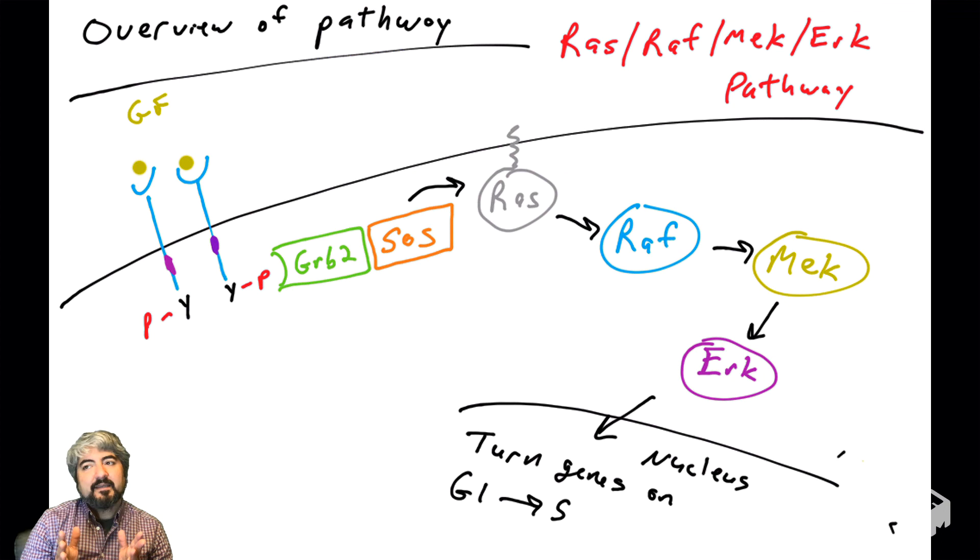This pathway is commonly misregulated in human cancers and is a target for many drugs that can be used to stop cancer cells from growing. We have to understand how this pathway plays a role in sending proliferation signals into the nucleus.